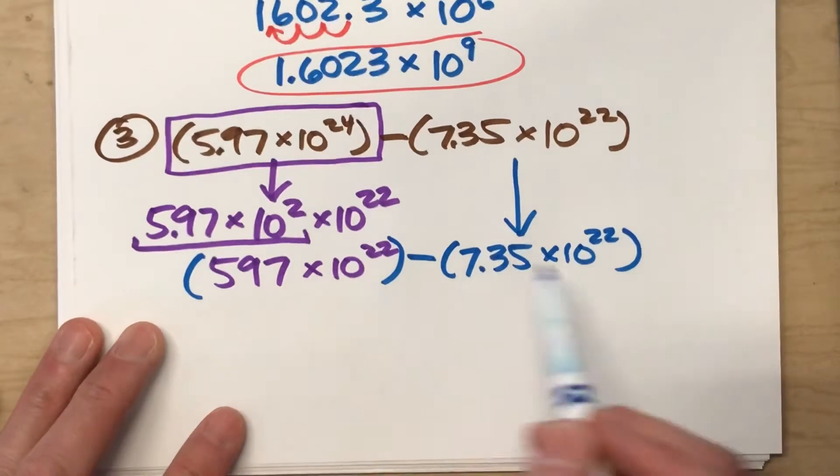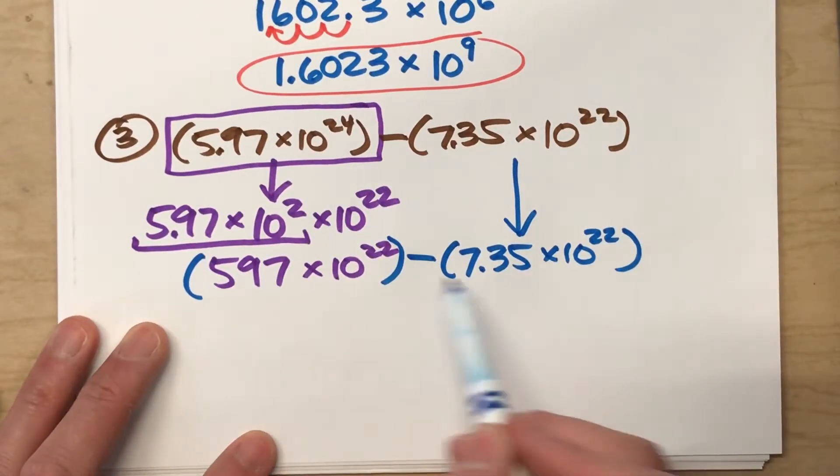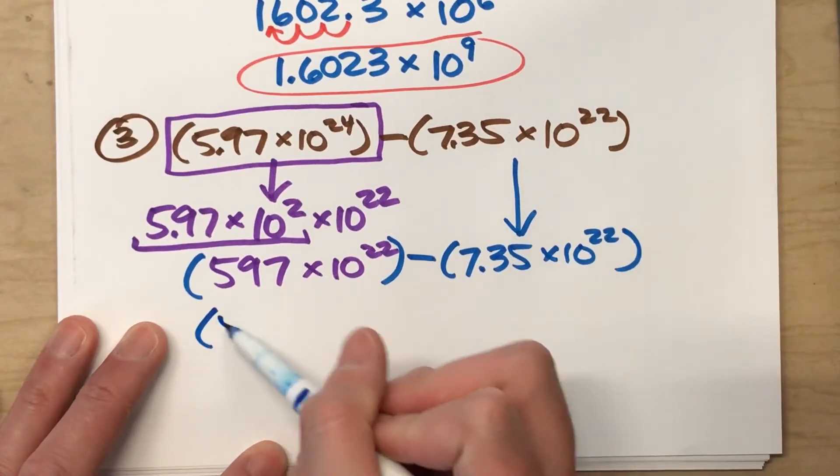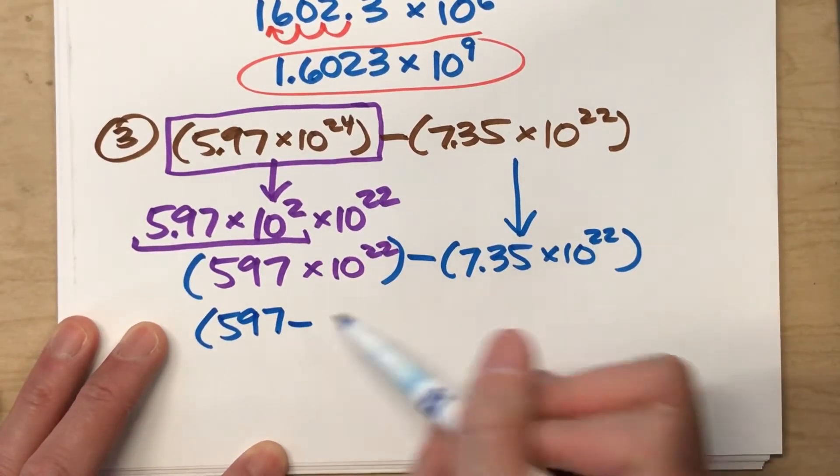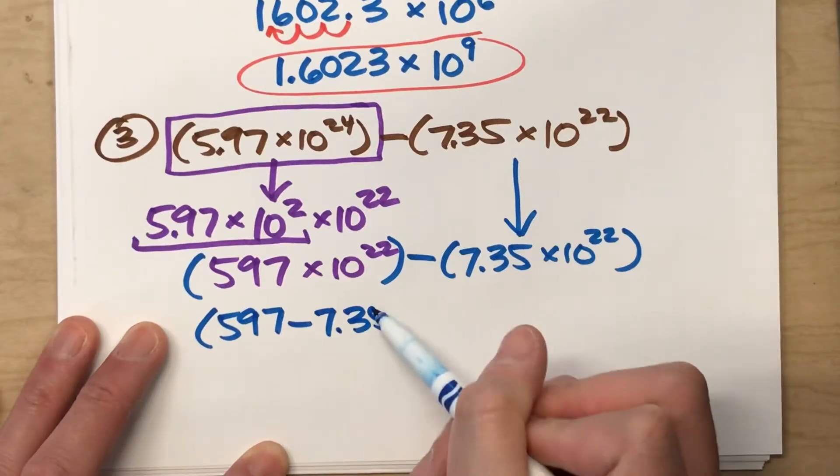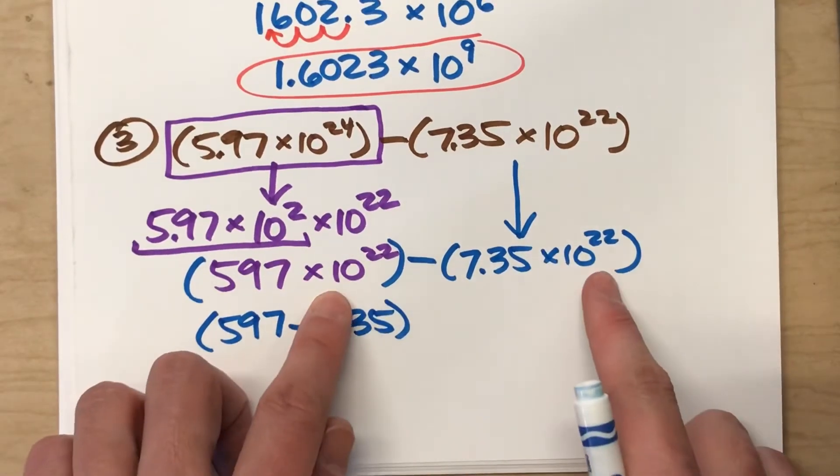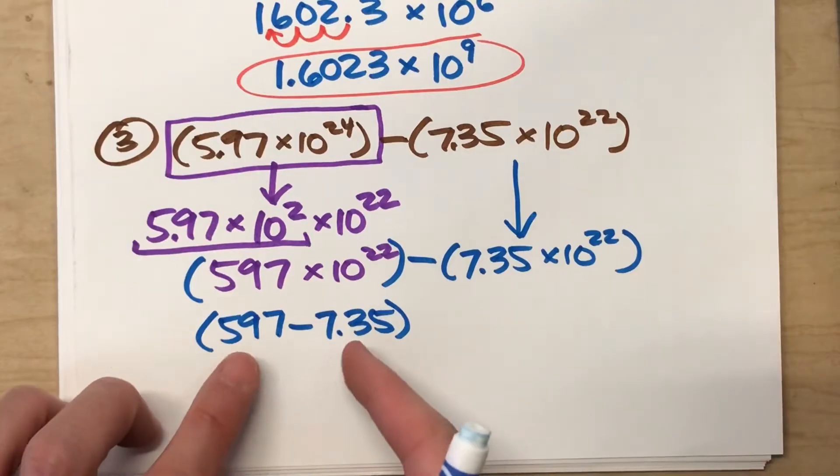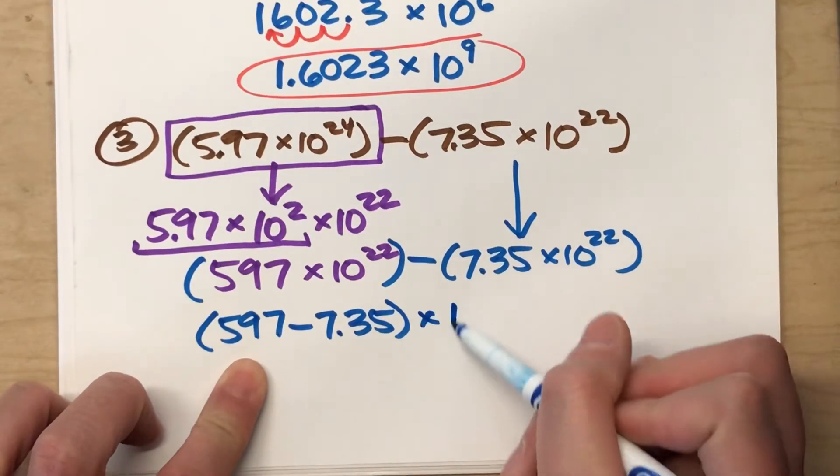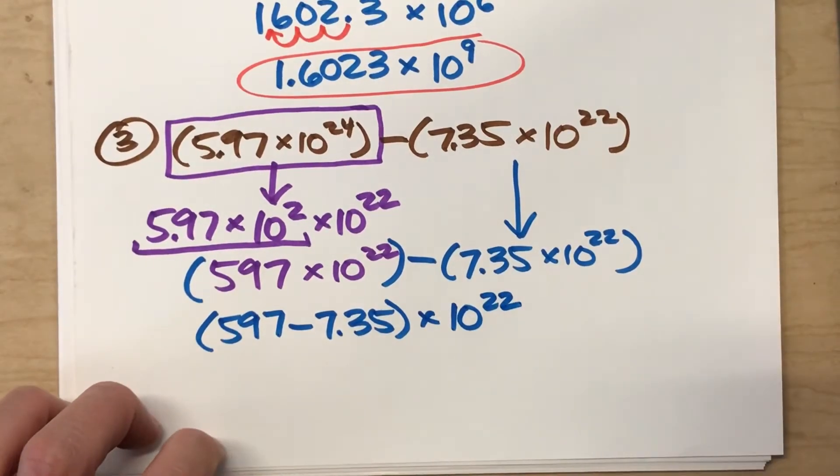So to subtract these, I just take the coefficients and subtract them. So the 597 minus the 7.35. And because both of these numbers are being multiplied by 10 to the 22nd power, I can take this answer and multiply it by 10 to the 22nd power.